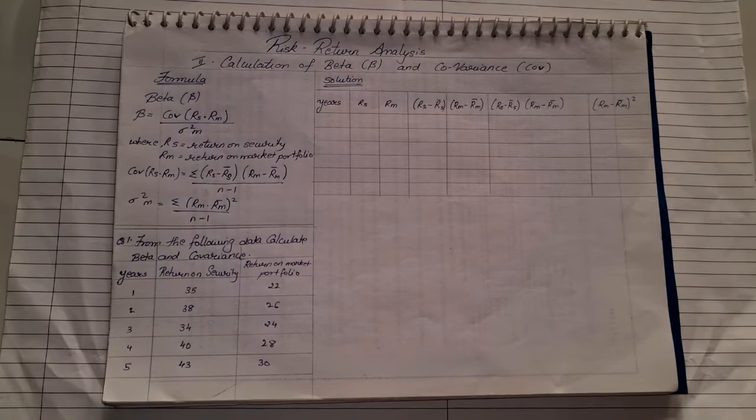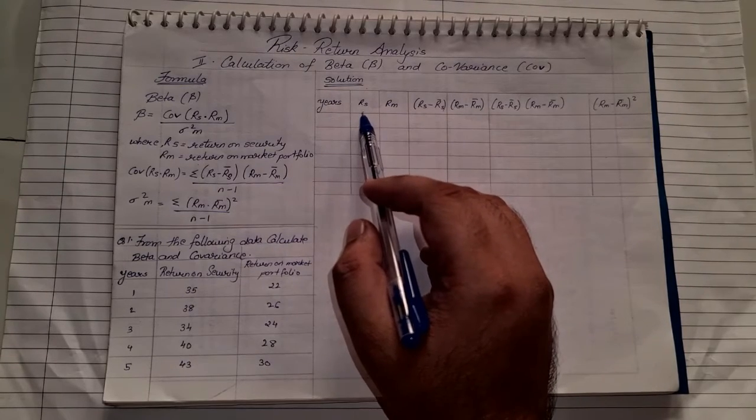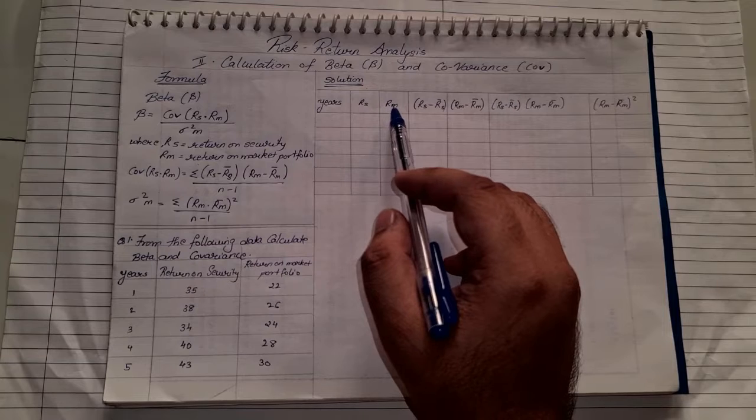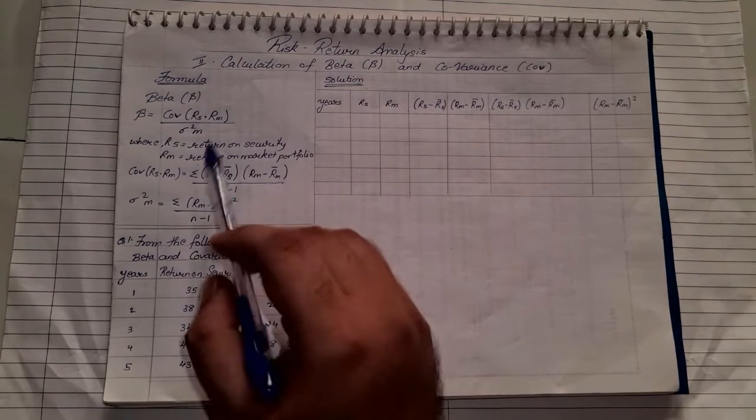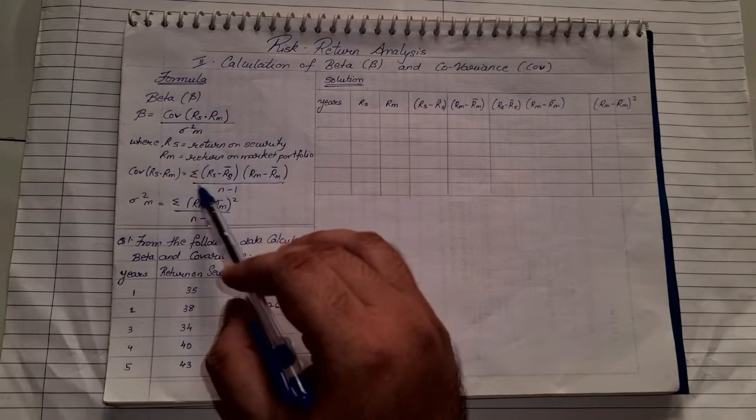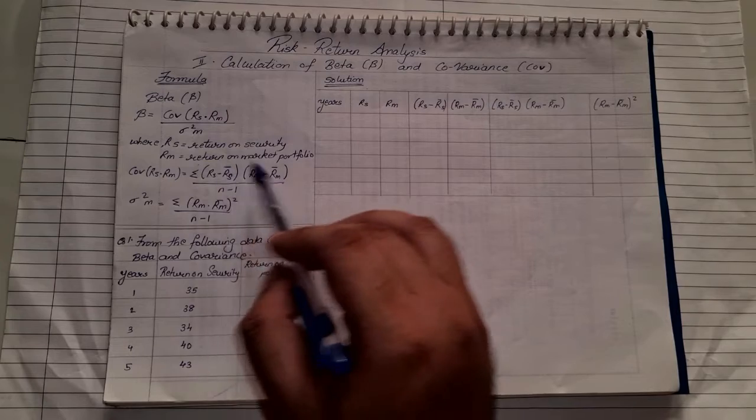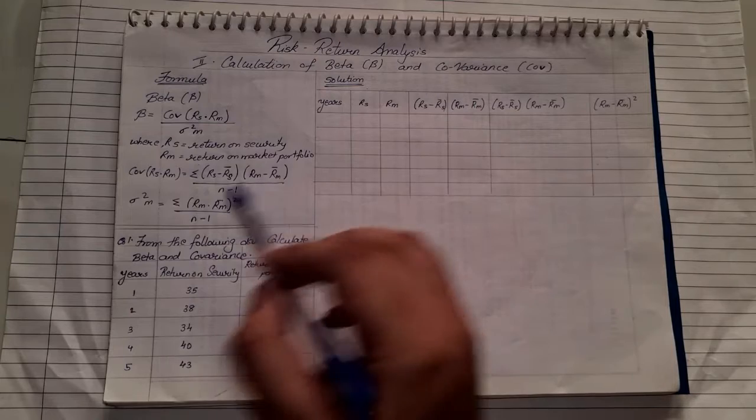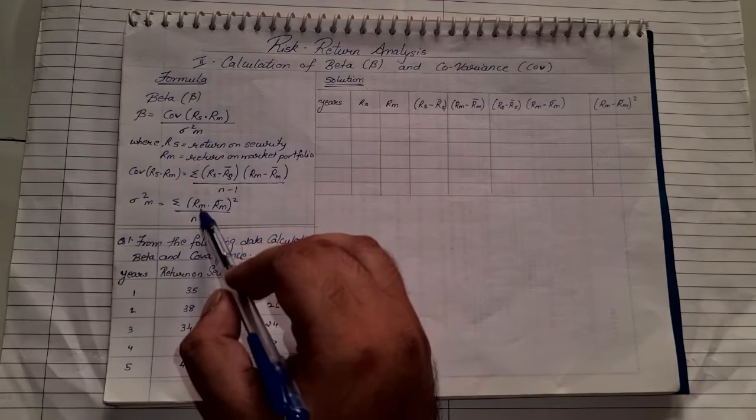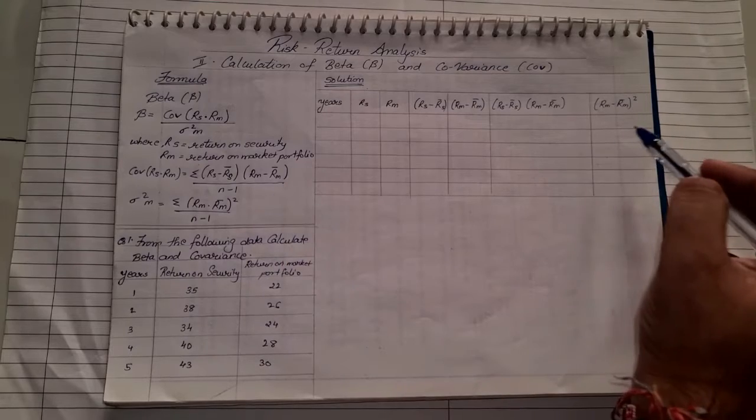Based on this, let us see how to solve the sum. Our table will have years, return of security, return on market portfolio. Then according to what we require for covariance, I need (RS - R̄S), (RM - R̄M), and then the multiplication of both. So three columns will be based on covariance. And for getting standard deviation square M, that is (RM - R̄M)², that will be our last column.